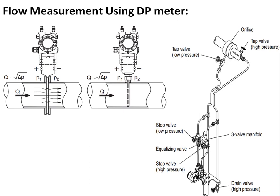For flow measurement using the DP transmitter, the different configurations shown on the left side illustrate flow measurement using an orifice and a pitot tube. The orifice and pitot tube cause a pressure drop. The difference in pressure is measured by the DP transmitter, which is proportional to the square root of delta P.